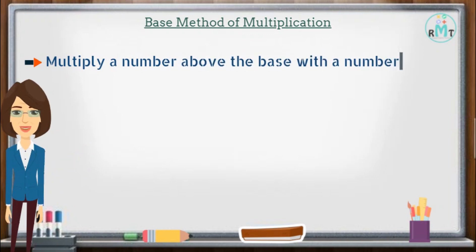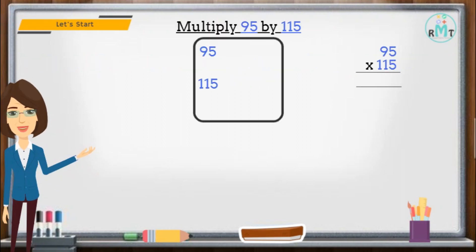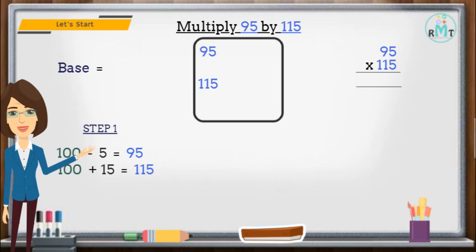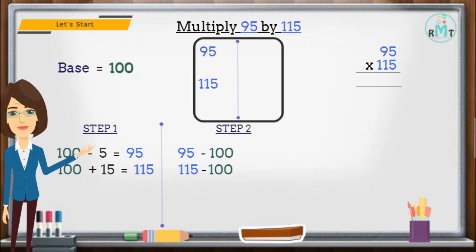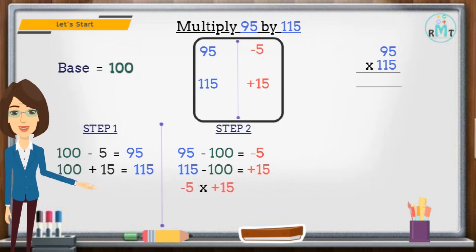Let's start. Multiply 95 by 115. Step 1: first we have to select the base. Since both numbers are close to 100, our base is 100. Step 2: subtract 95 and 115 from the base, which is 100. The difference between 95 and 100 is minus 5. Similarly, the difference between 115 and 100 is plus 15. Now we multiply minus 5 with plus 15, so we get minus 75.